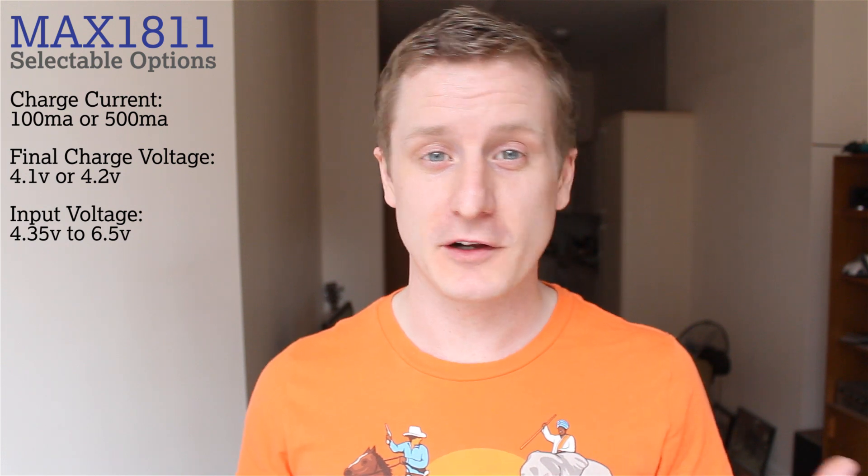So that was a very quick introduction to what the MAX1811 can do and how you can shove it in a circuit really, really quickly and select the options that you want. So like 4.1 volts or 4.2 or a charging current of 100 milliamps or 500 milliamps, depending on what your application can provide.